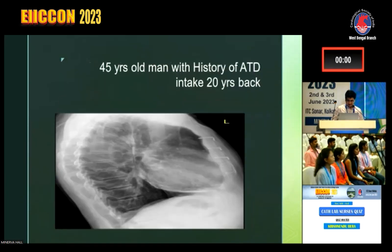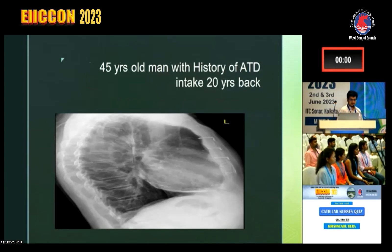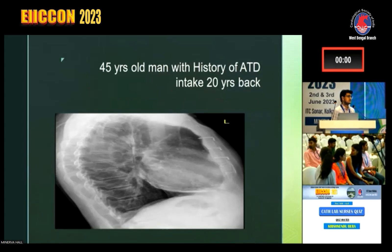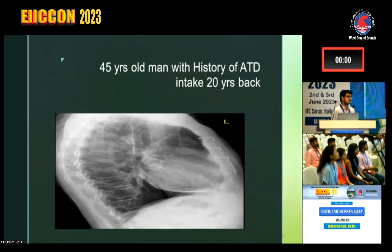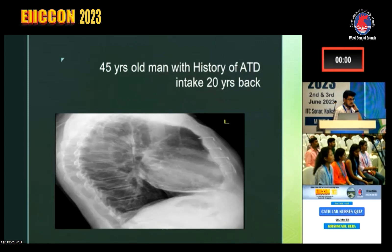What is this X-ray showing? A 45-year-old man has a history of taking anti-tubercular drugs 20 years back. There is pericardial calcification — you will get a point. This is called constrictive pericarditis with calcification — constrictive pericardial calcification.